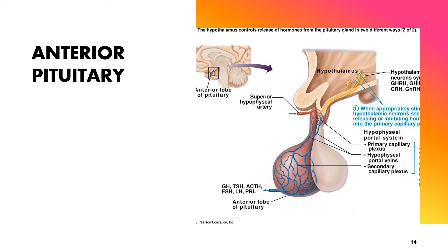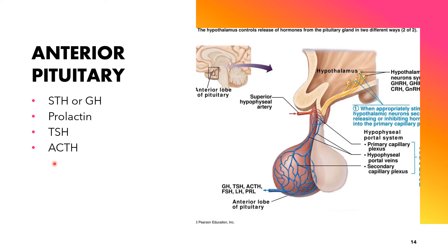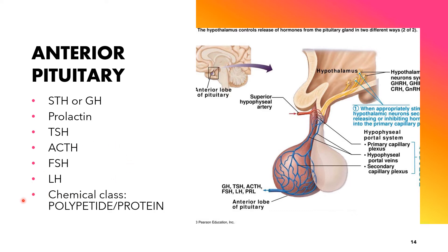The hormones secreted by the anterior pituitary include somatotropin (STH), or growth hormone; prolactin; thyroid-stimulating hormone (TSH); adrenocorticotropic hormone (ACTH); follicle-stimulating hormone (FSH); and luteinizing hormone (LH). In terms of chemical class, these are classified as polypeptide or protein hormones.